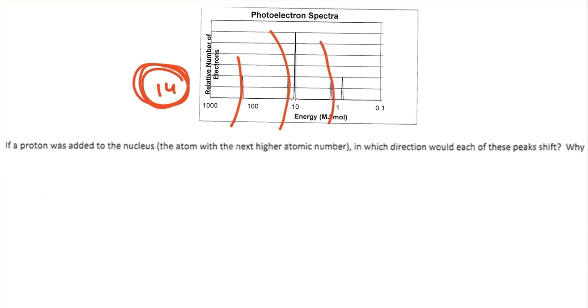So if we were to add another proton into the nucleus, it would be 15 protons, and all of these electrons will be pulled even closer towards the nucleus because there's more protons now, so it has a stronger nuclear charge.